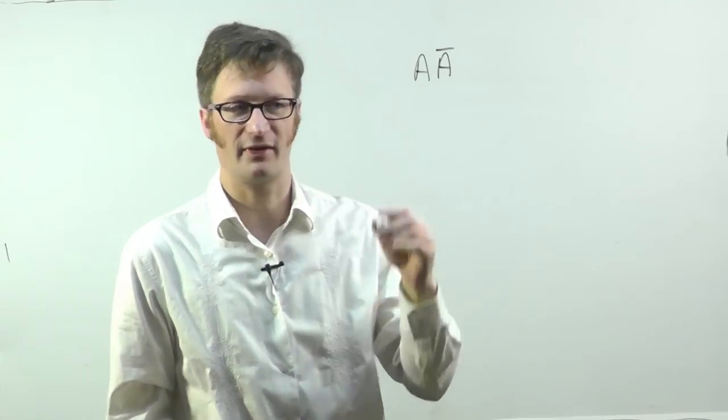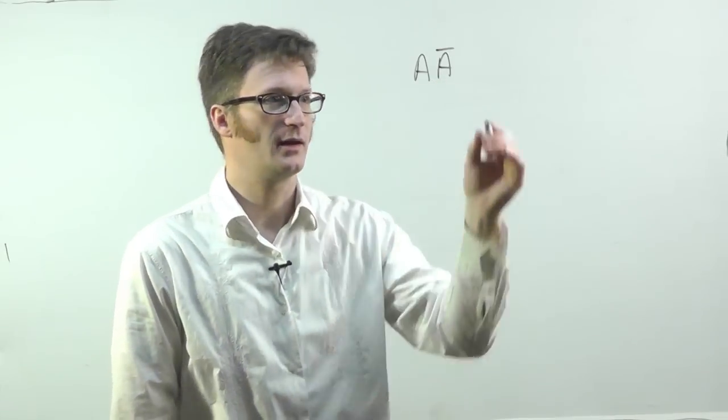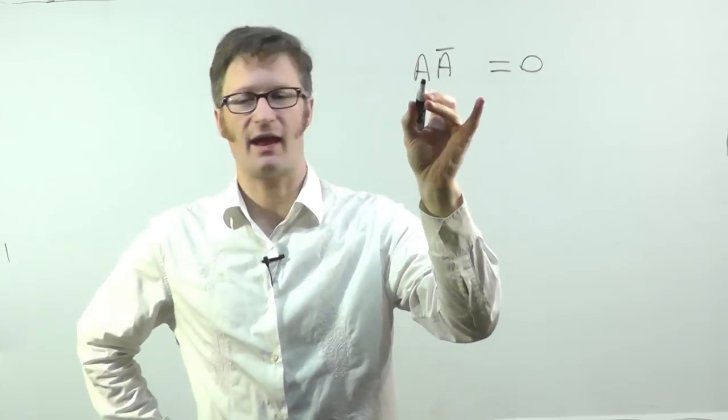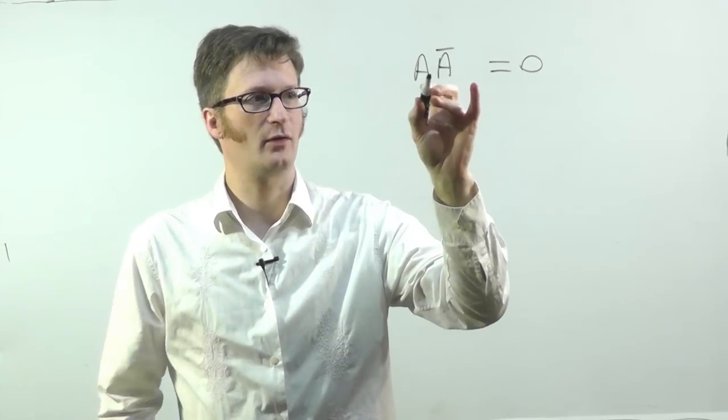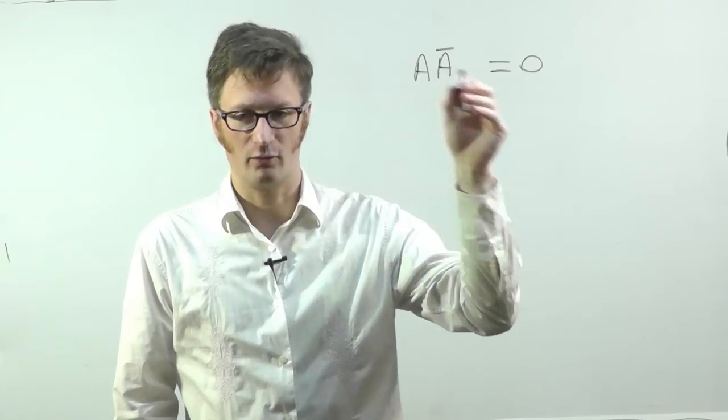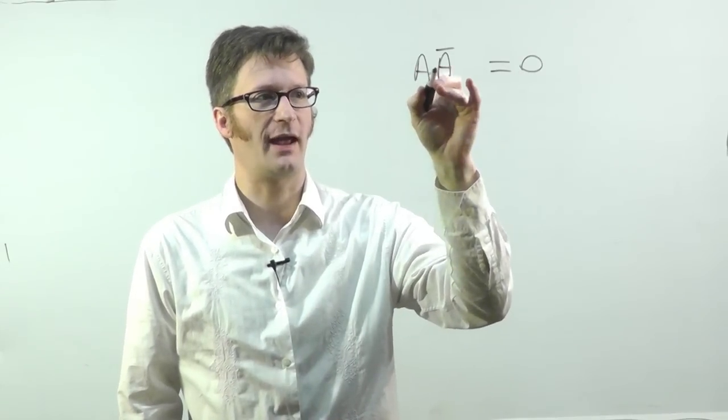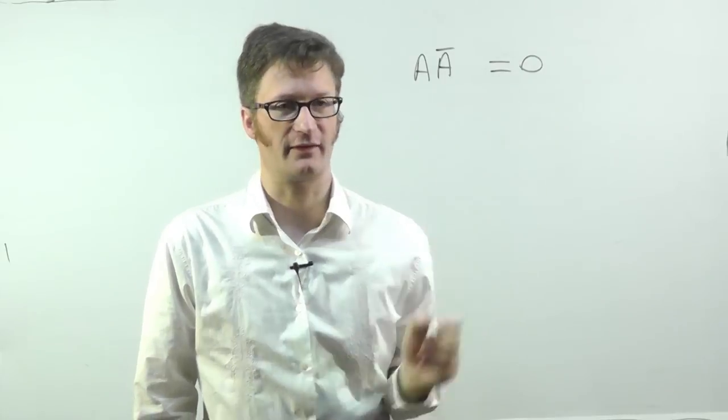Well, all of these logic functions evaluate into zero or one or true and false. And so if I have A bar, essentially A and A bar, that's going to always evaluate to zero. Because let's say A is zero. Zero and one will work out to zero. And if this is one, one and zero still works out to zero.